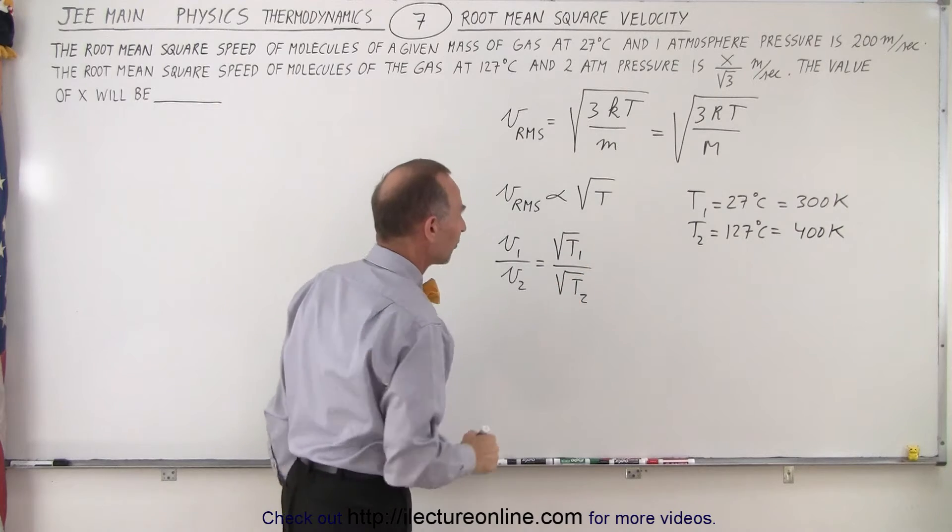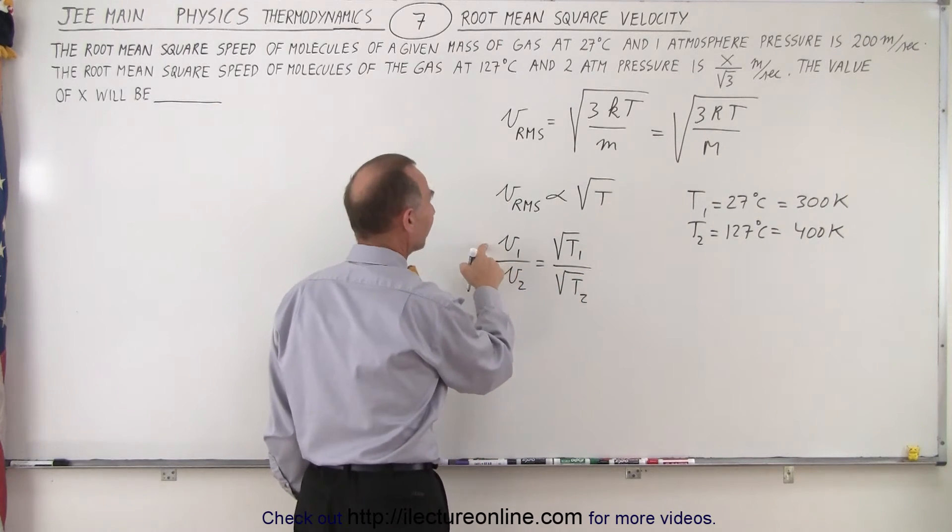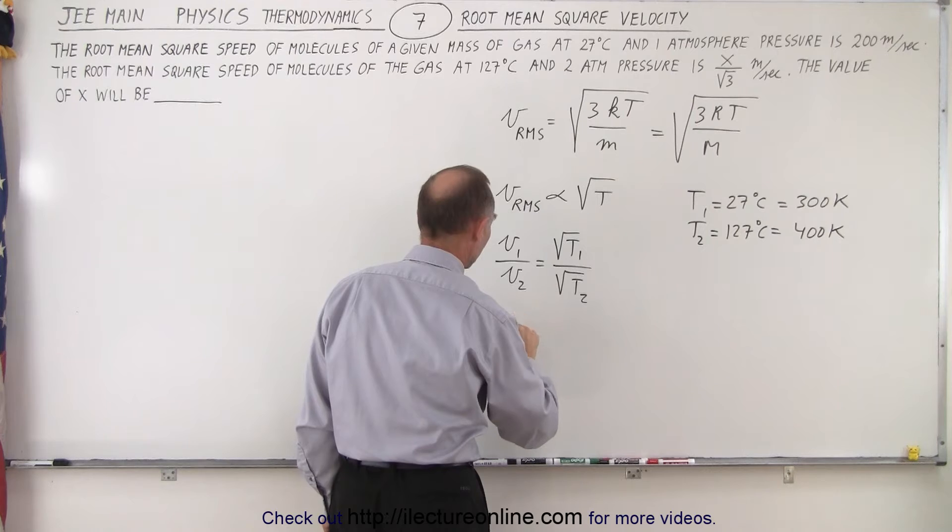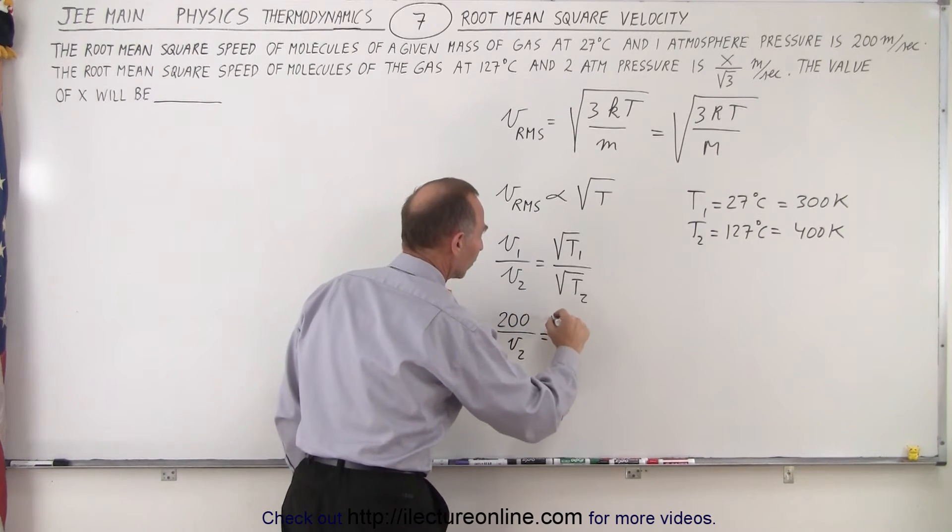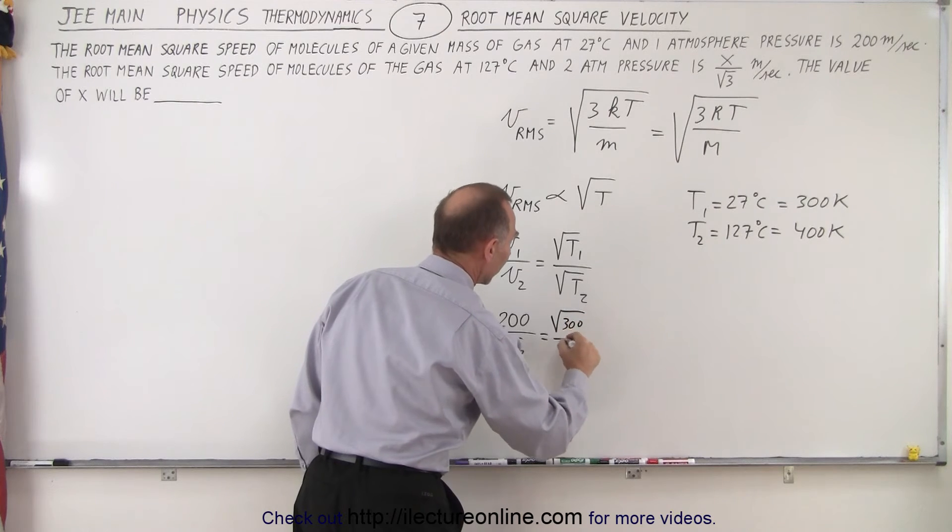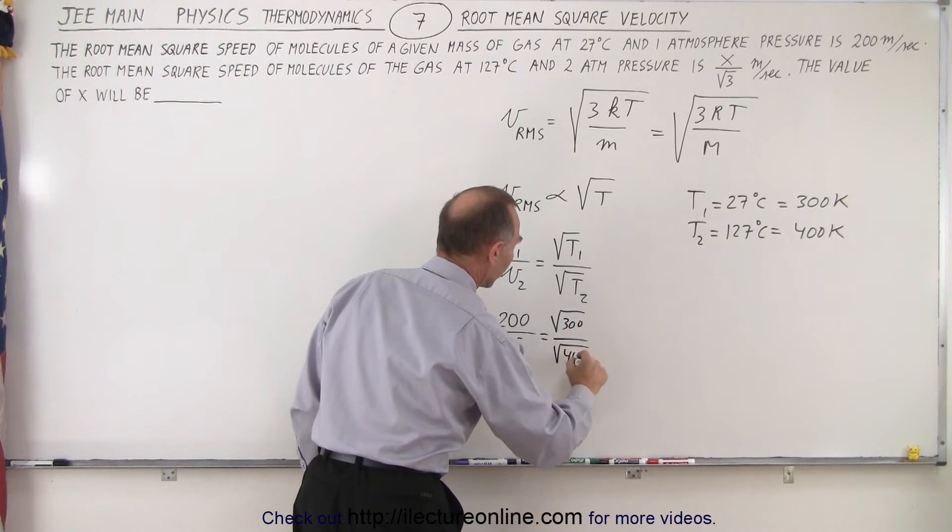So we can plug those numbers in for T1 and T2, and now for V1, we have 200 meters per second, so we end up with 200 divided by V2 is equal to the square root of 300 divided by the square root of 400.